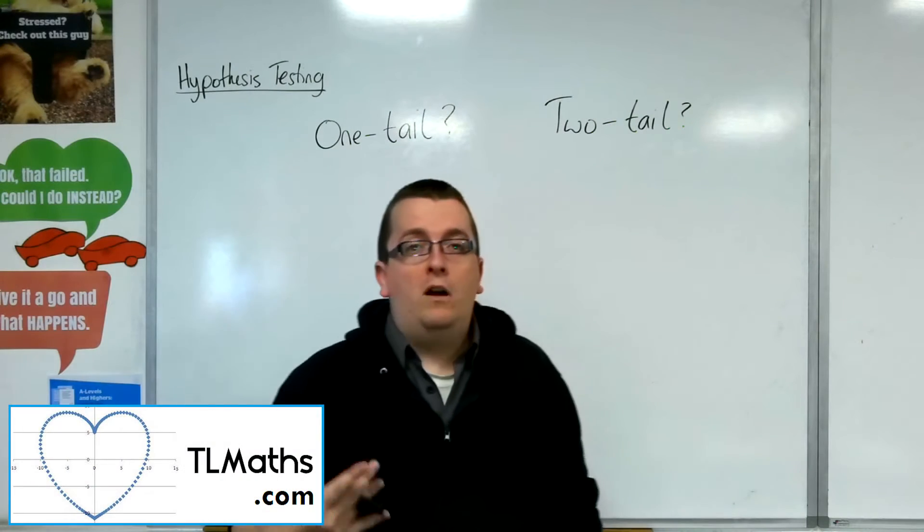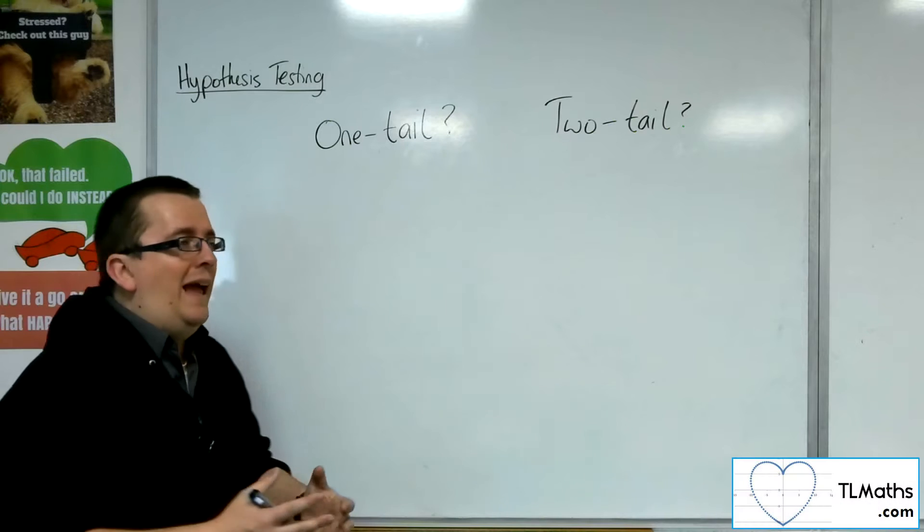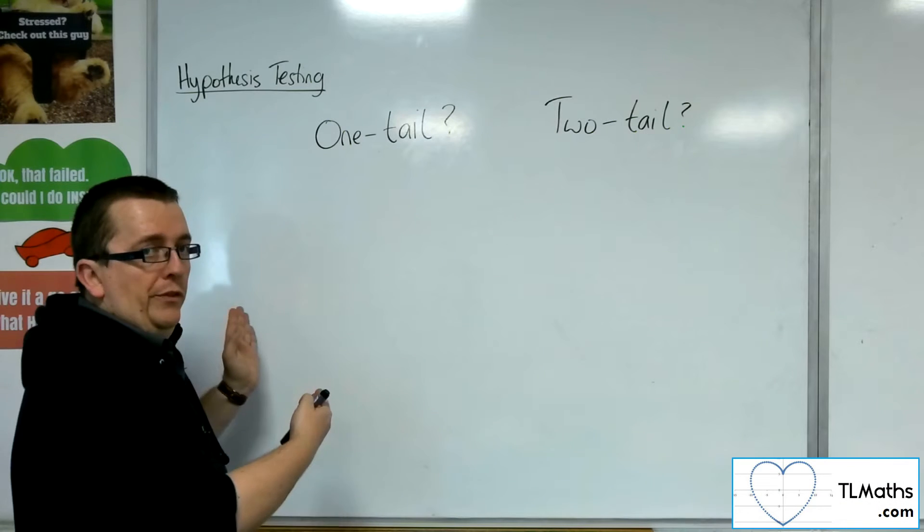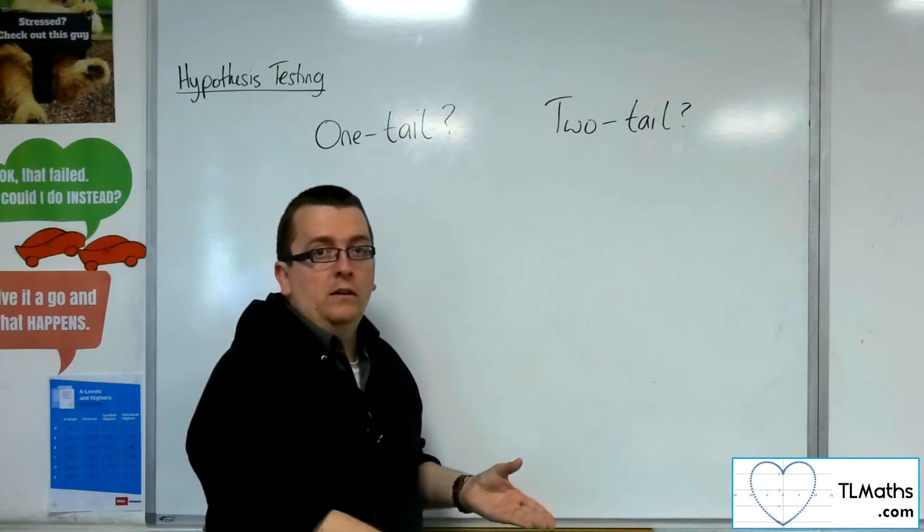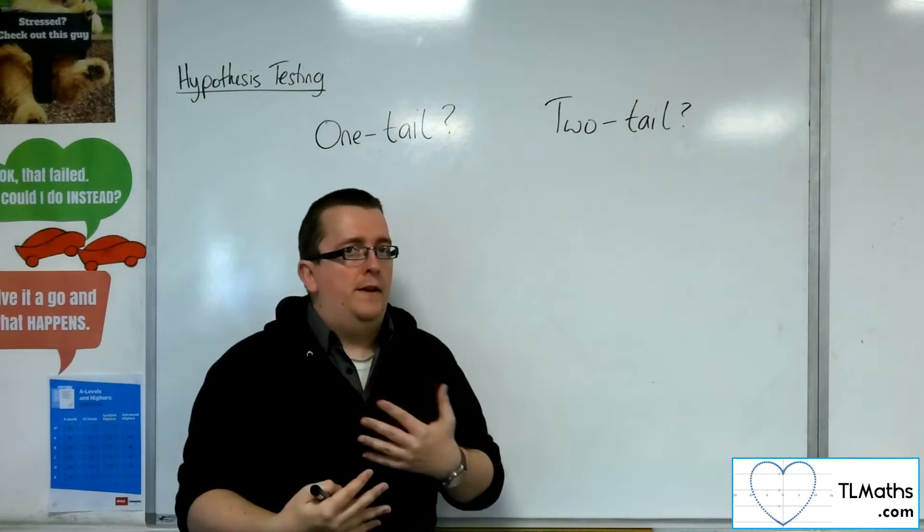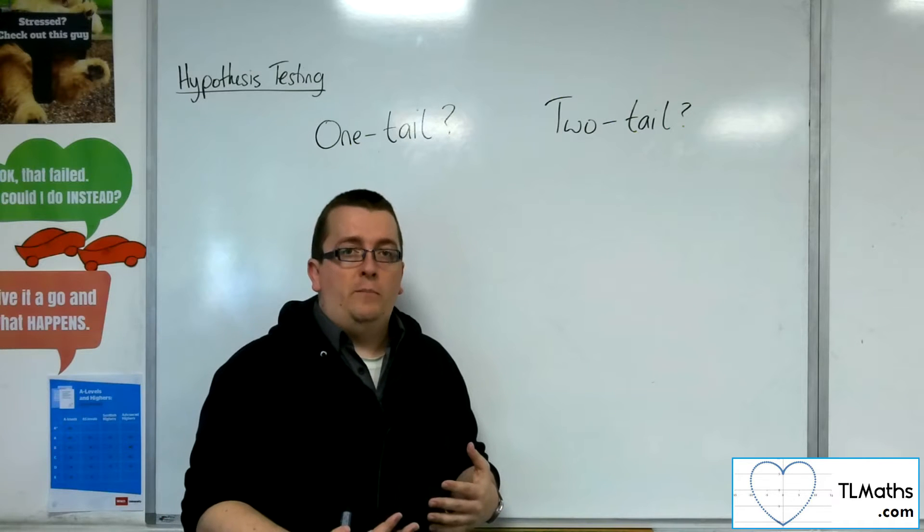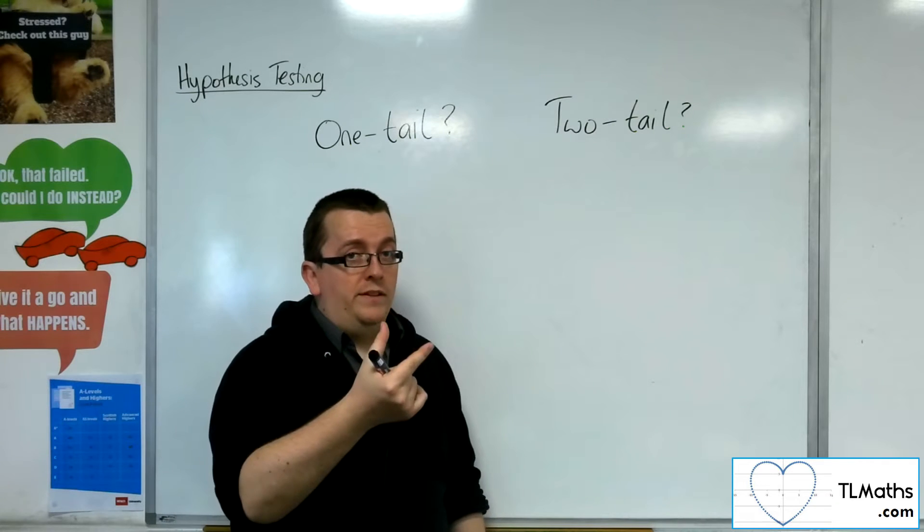So when you're about to perform a hypothesis test, you need to identify whether you're looking at a one-tail hypothesis test or a two-tail hypothesis test. And that can be inferred from the null and alternative hypothesis that you have, or really the alternative one.